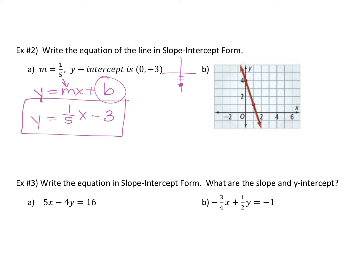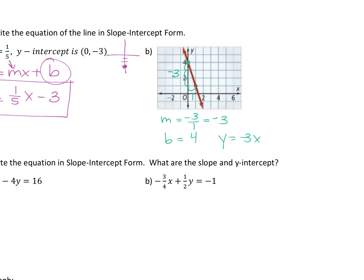See if you can find the equation of part b in slope-intercept form. Your slope — you're going to start at the farthest left point and go down and over. That's negative 3 down over 1, so your slope is negative 3 over 1, or just negative 3. What's your y-intercept? Your b value? 4. So you're going to say y equals negative 3 times x plus 4.